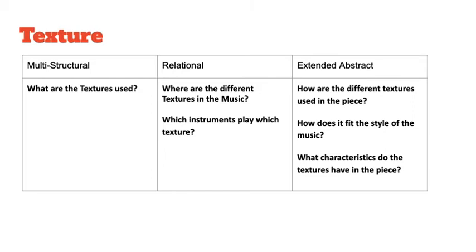Extended abstract is about how the different textures are used in the piece. Questions to consider include: how does it fit the style of the music, and what characteristics do the textures have in the piece? You should demonstrate a thorough understanding and incorporate other elements and features in your answer. For example, you could say there is a thick monophonic texture in this piece of music, which actually makes the piece sound louder as well.